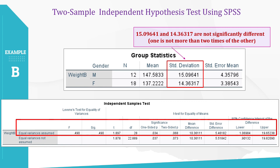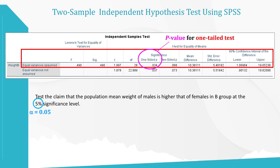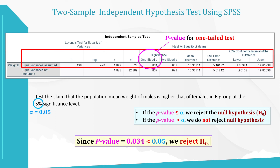The significance columns show the p-value, same as before. Since we are doing a one-tailed test, use the one-sided p-value, which is 0.034. We identify the alpha value from the question sentence as 5% significance level. Here is the decision rule for the p-value approach: since our p-value 0.034 is less than the alpha value 0.05, we reject the null hypothesis H0. Therefore, there is enough evidence to conclude that the population mean weight of males is higher than that of females in group B.